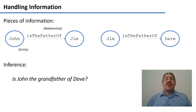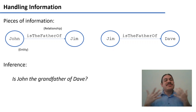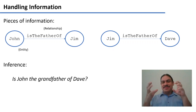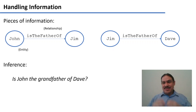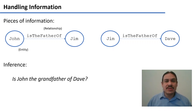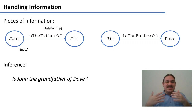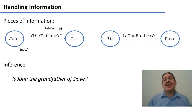Regardless of how we store our information, we have pieces of information about the universe. John is the father of Jim. Jim is the father of Dave. This is one of the things that we want to do for sure — we want the computer to know things, so that if we ask it 'Is John the father of Jim?' the computer will have some means of answering yes.